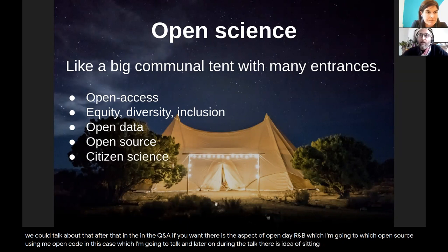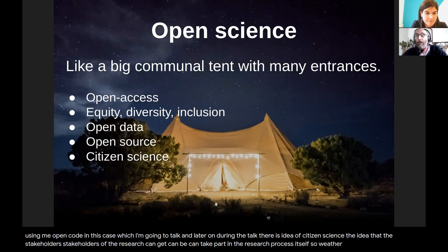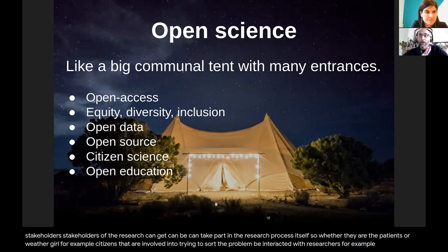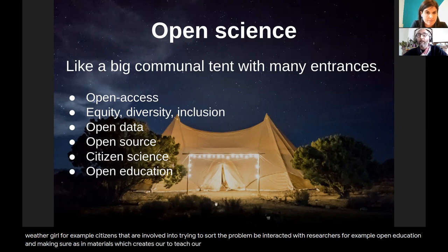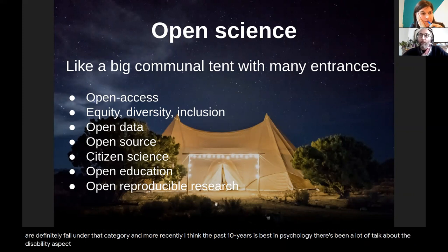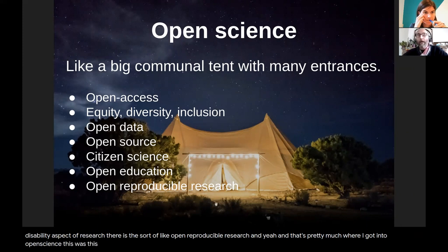There is the idea of citizen science — that stakeholders of research, whether patients or citizens trying to solve a problem, can take part in the research process itself and interact directly with researchers. There's also open education, making sure teaching materials are openly accessible to everyone — MOOCs are a popular example. And more recently, especially in psychology, there's been a lot of talk about reproducibility. That's pretty much where I got into open science — that was the door I came through.